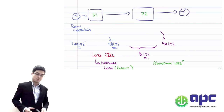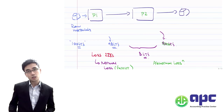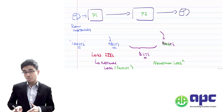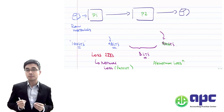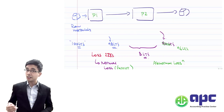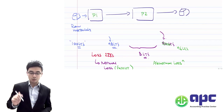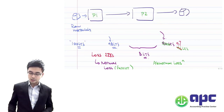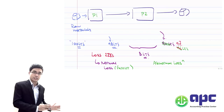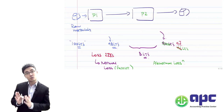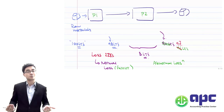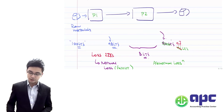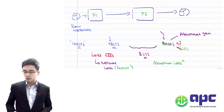Alternatively, if you input 98 into process two and get 97 litres out, you expected to lose two litres but only lost one litre — losing less than expected. That one litre will cause an abnormal gain. How do we account for that as well?